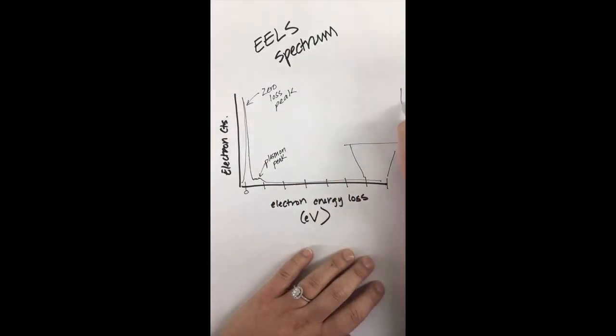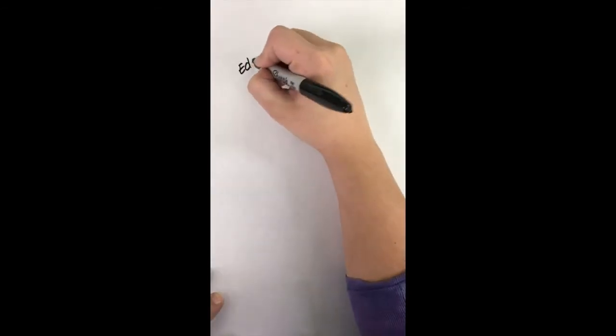Secondly, there's the plasmon peak in the low loss region. The third and final region of the spectrum starts at around 600 electron volts of energy loss. Peaks in this region are called core loss edge peaks and act as a chemical fingerprint for the elements in the sample.